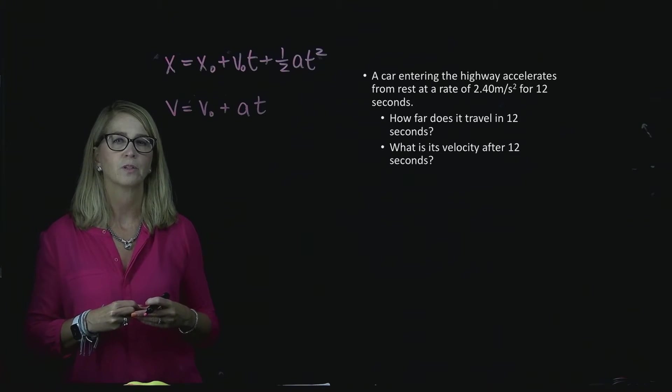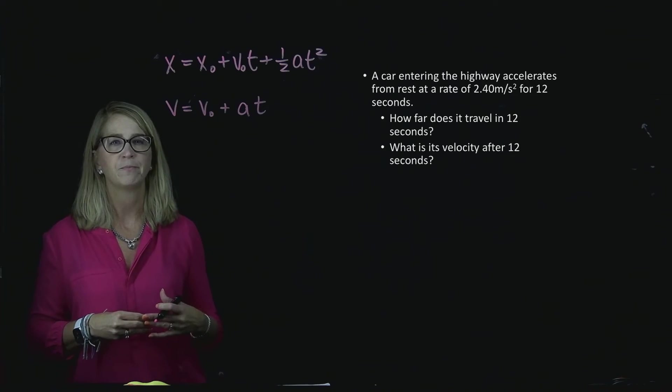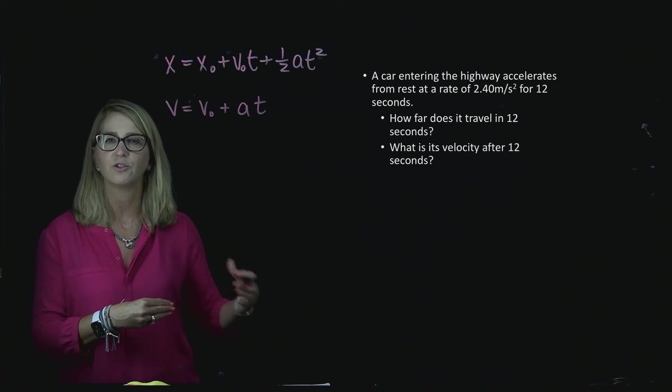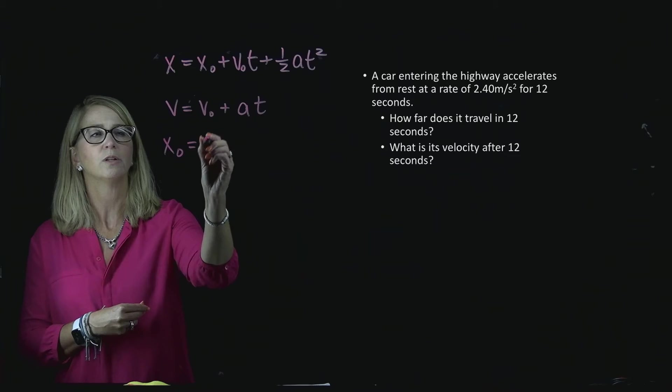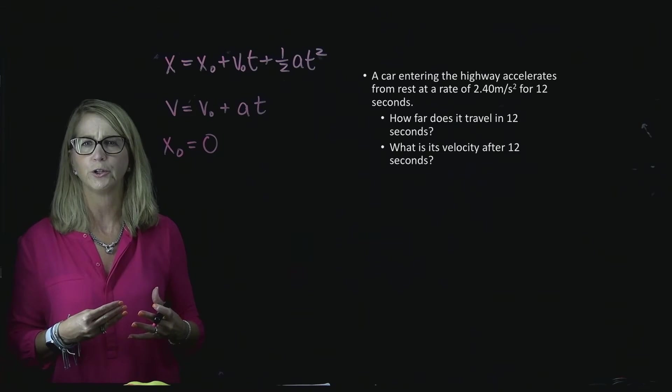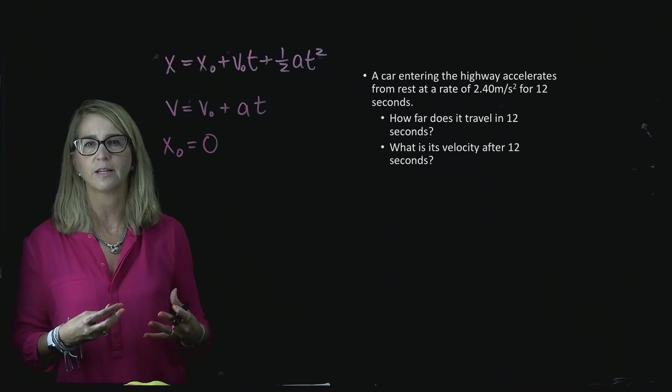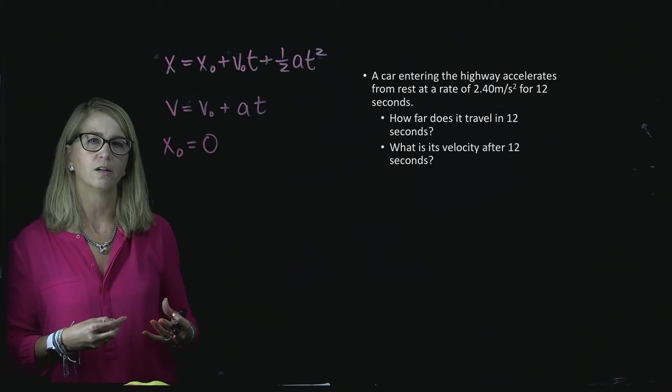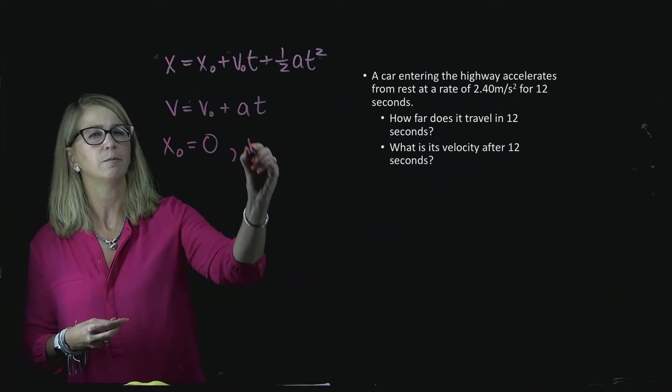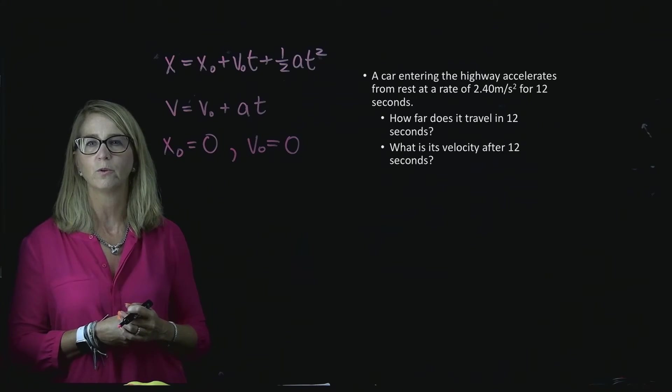So if I'm looking at this problem, sometimes I have to sort of read between the lines to figure out my values. It says the car is entering the highway, and so really what we can do is we could just say, well, we'll say from the moment it starts accelerating, the moment it starts entering the highway, we'll call that the initial position, and we'll let that be zero. We're able to put our initial position in a problem wherever we want to. So we can often make it zero, but sometimes it won't make sense, and we'll give it another value. In this case, it does make sense to let it be zero. Now, as I read further along, I see that it starts at rest, and that might be easy to miss, but what they're really telling me is that the initial velocity is zero.